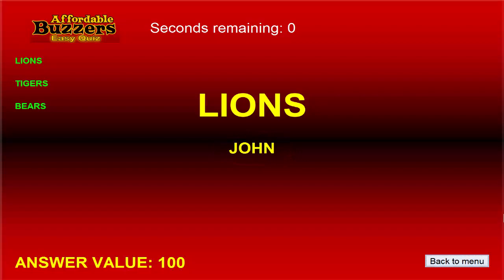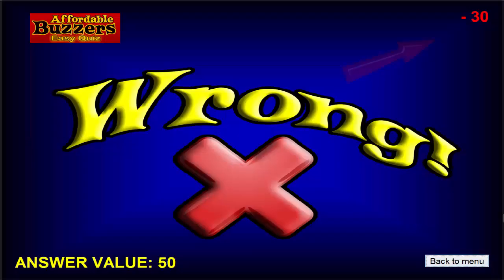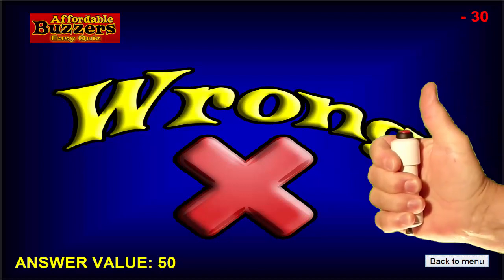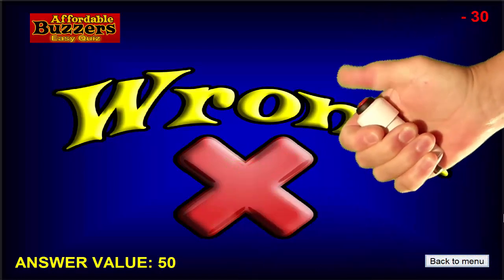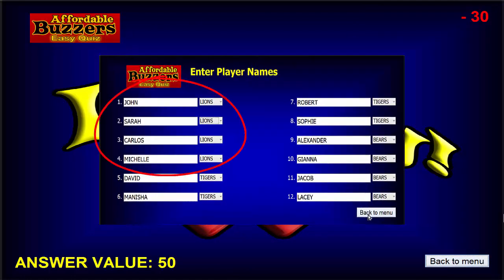Any points won or lost on this question will affect the score of the Lions team. There are no scores tabulated for individual player names. Let's say John gives a wrong answer — Team Lions is going to lose 30 points, and the question is now only worth 50 points. When players 2, 3, and 4 press their buzzers, nothing happens, because they were all assigned to the Lions team and the Lions have already answered incorrectly.